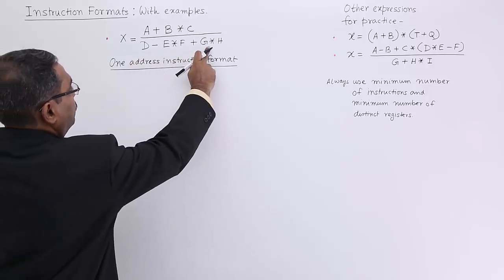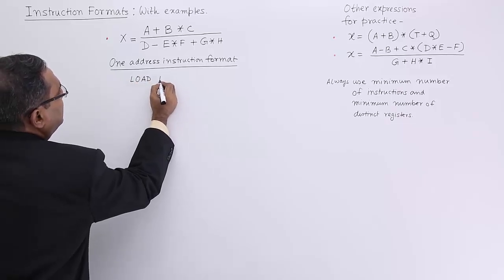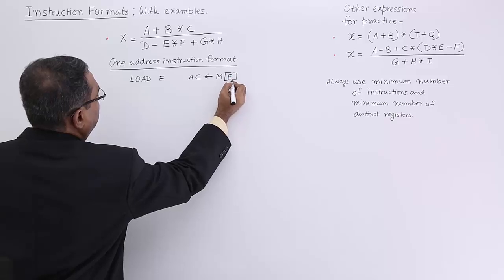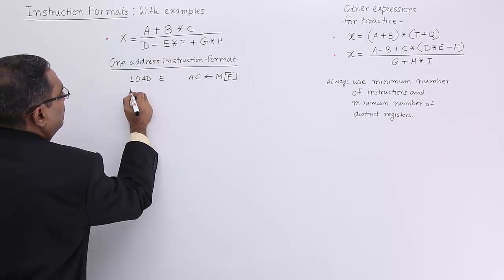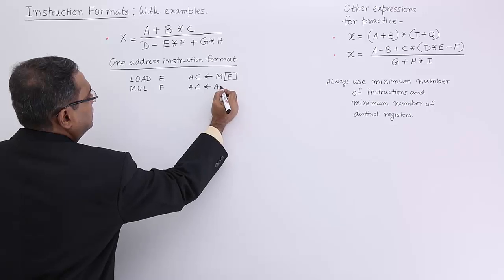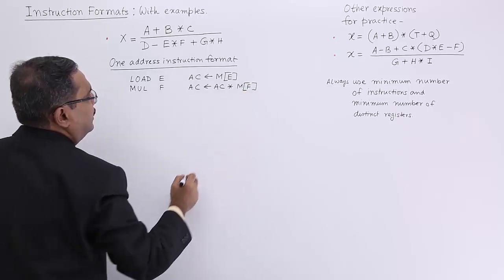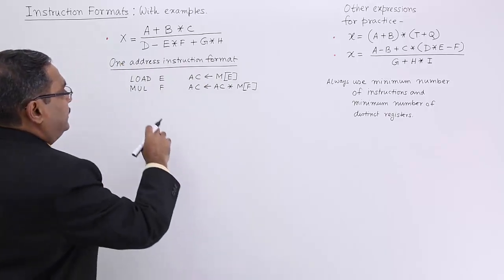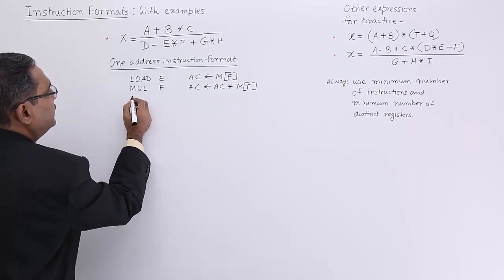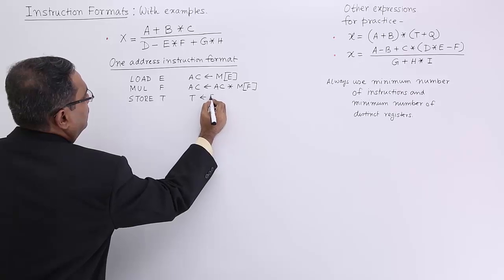Let me show you the code. I am going for LOAD E — the accumulator is getting initialized with the memory content of variable E. Now MUL F — the accumulator is getting initialized by the product of the accumulator's previous content and the content of variable F. Now E times F, the product, is residing in the accumulator. So let me put it in a temporary variable: STORE t. So t is containing E * F.